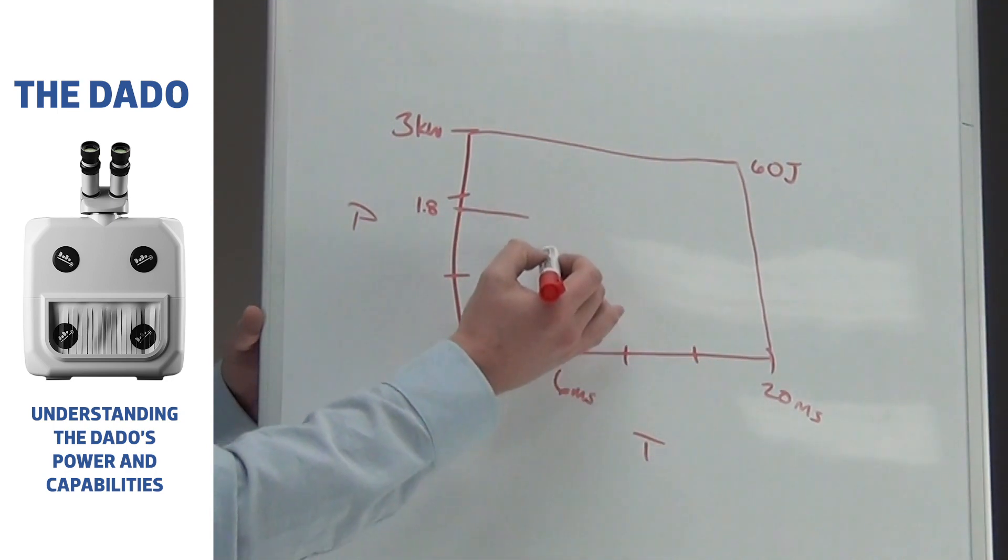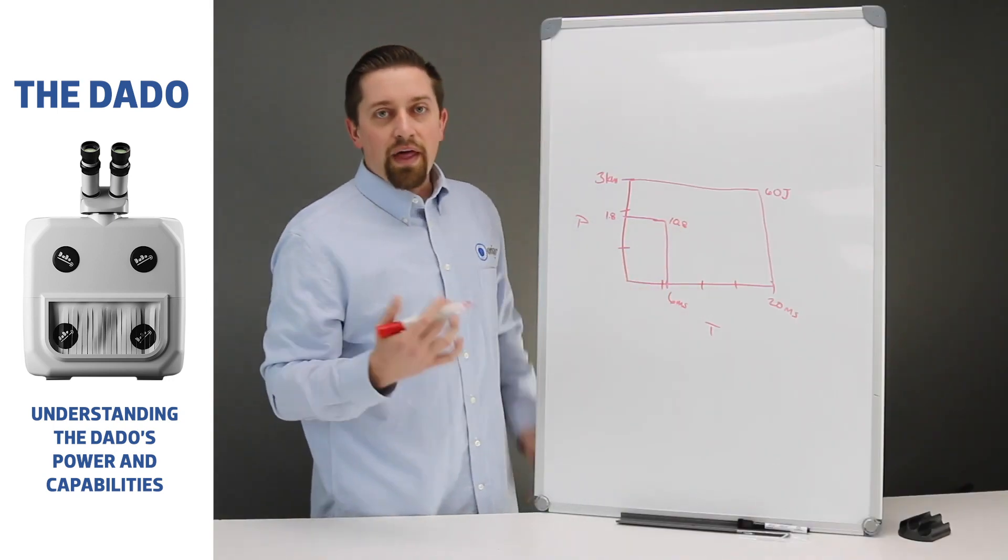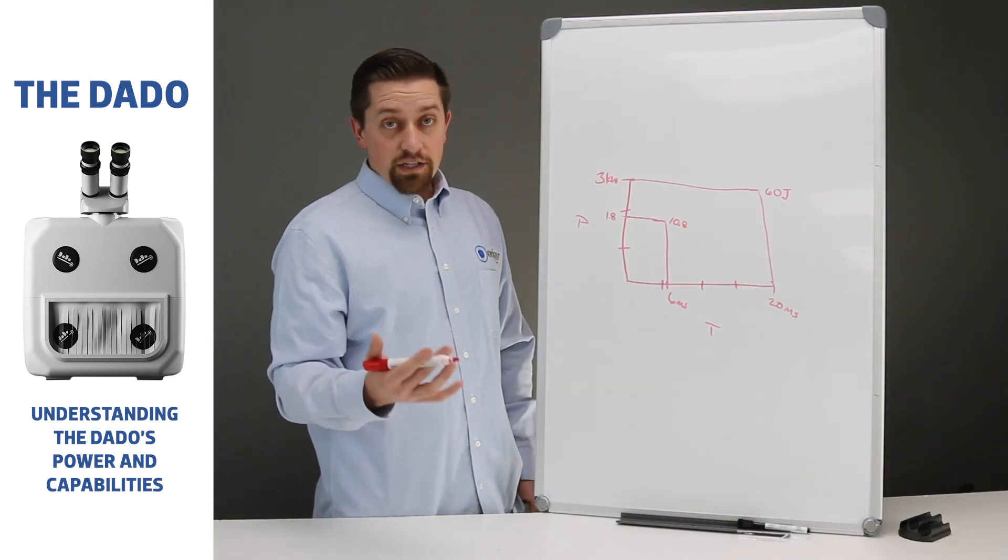...the most I can sustain a weld on the Datto is 6 milliseconds. So 1.8, that's 6 milliseconds. Do the math, that gives you only 10.8. That's where it's a 10.8 joule laser welder.